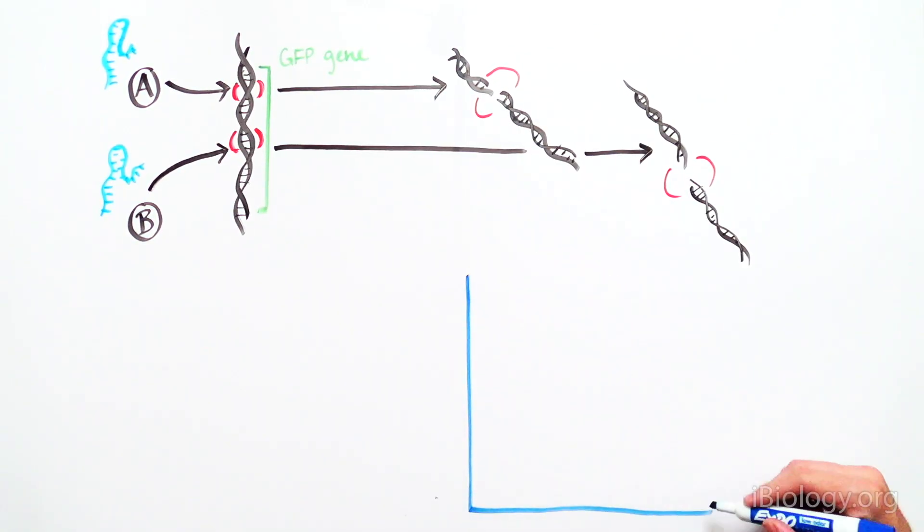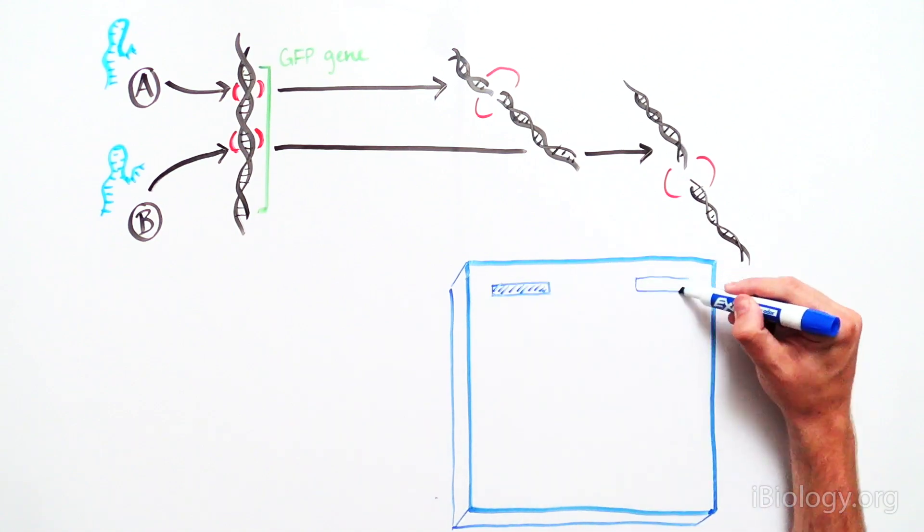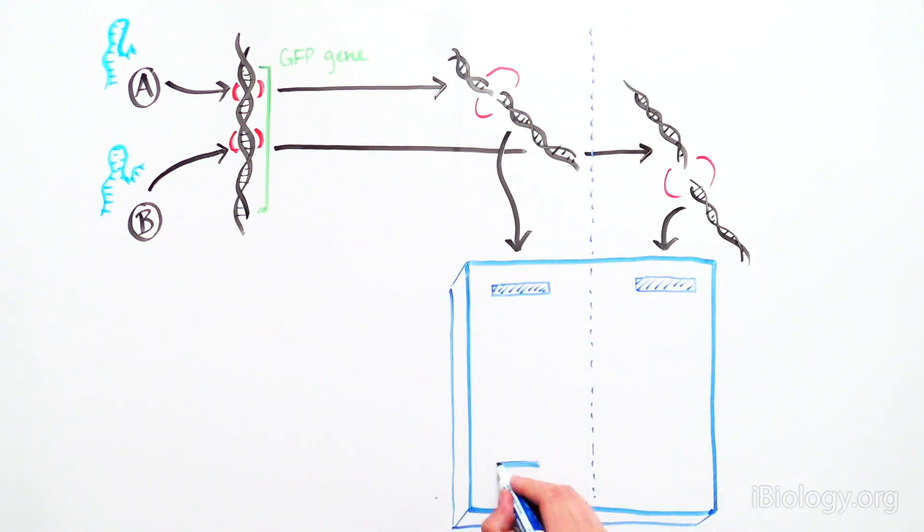On a gel that separates DNA according to size, you can see distinctly sized fragments of the GFP DNA molecule resulting from having been cut in a specific location.